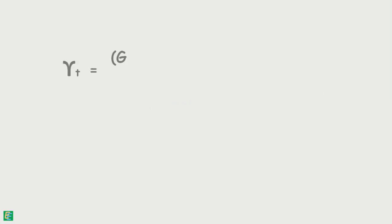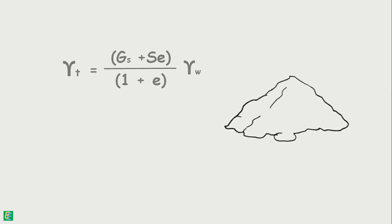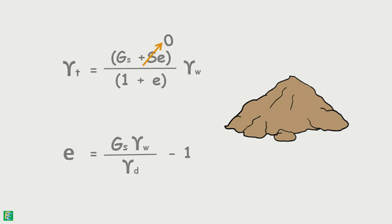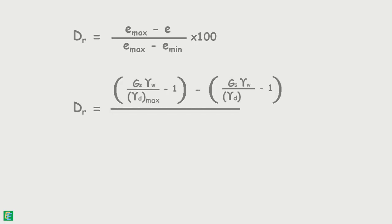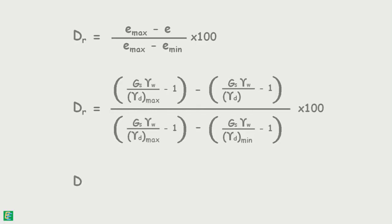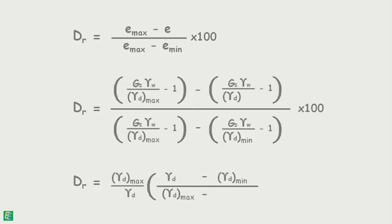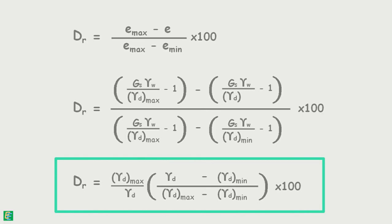We know this relationship. For the dry mass of soil, saturation will be 0. So, after rearranging it a little, we can find the void ratio in terms of dry unit weight. Substituting this in the equation and solving, we can represent relative density in the form of dry unit weight.